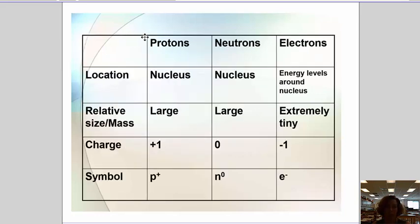The easiest way to do that is to create this chart. Pause the video and copy this chart down. Remember that protons and neutrons are in the nucleus of the atom, or the center. The electrons are in energy levels around the nucleus.